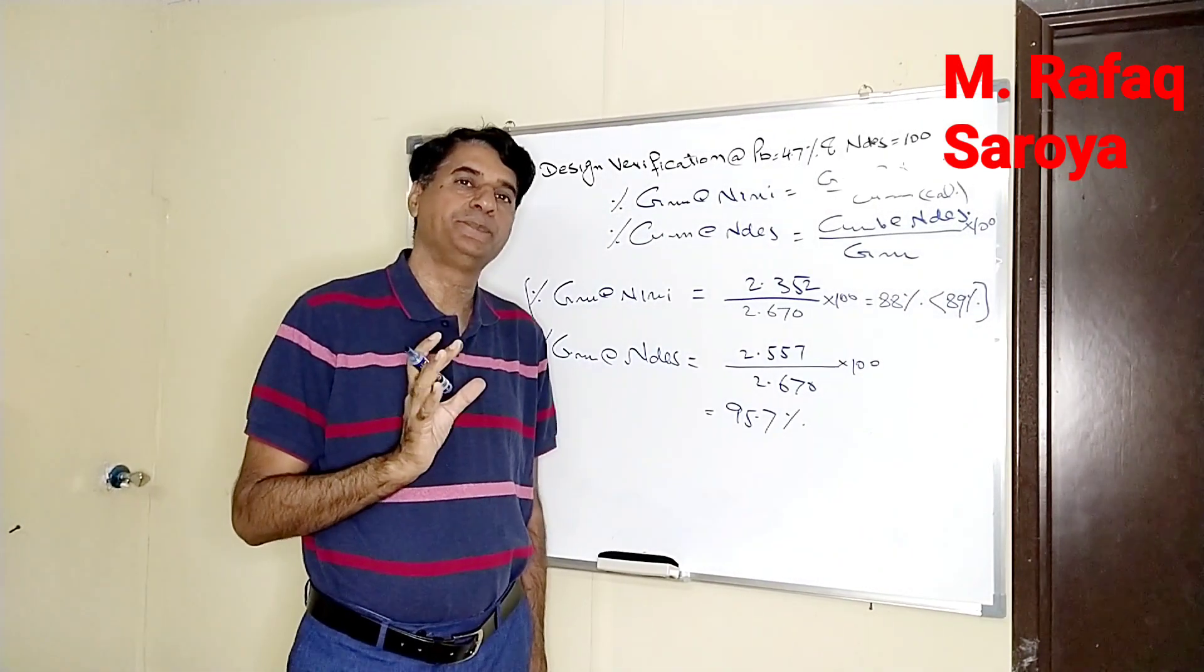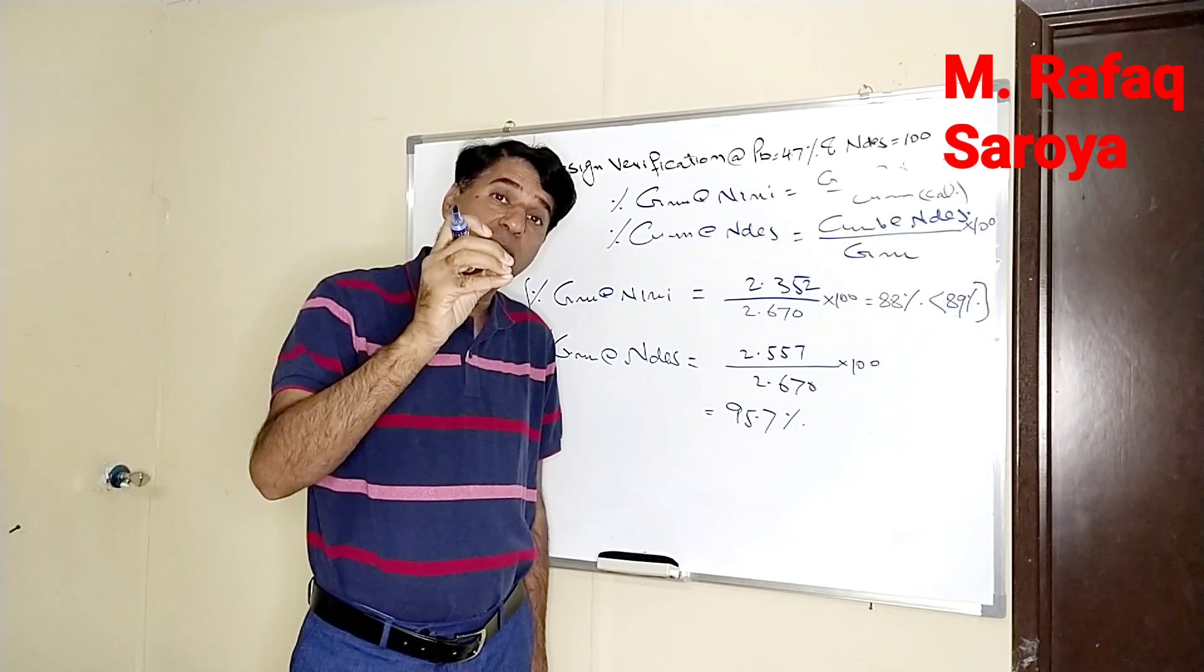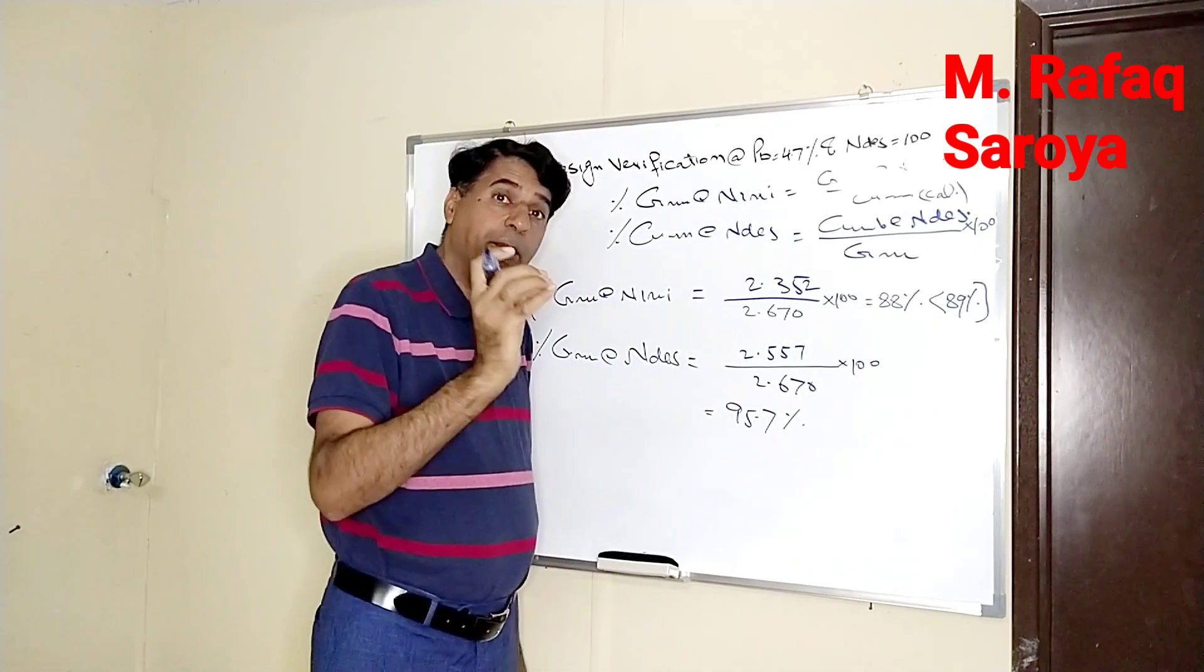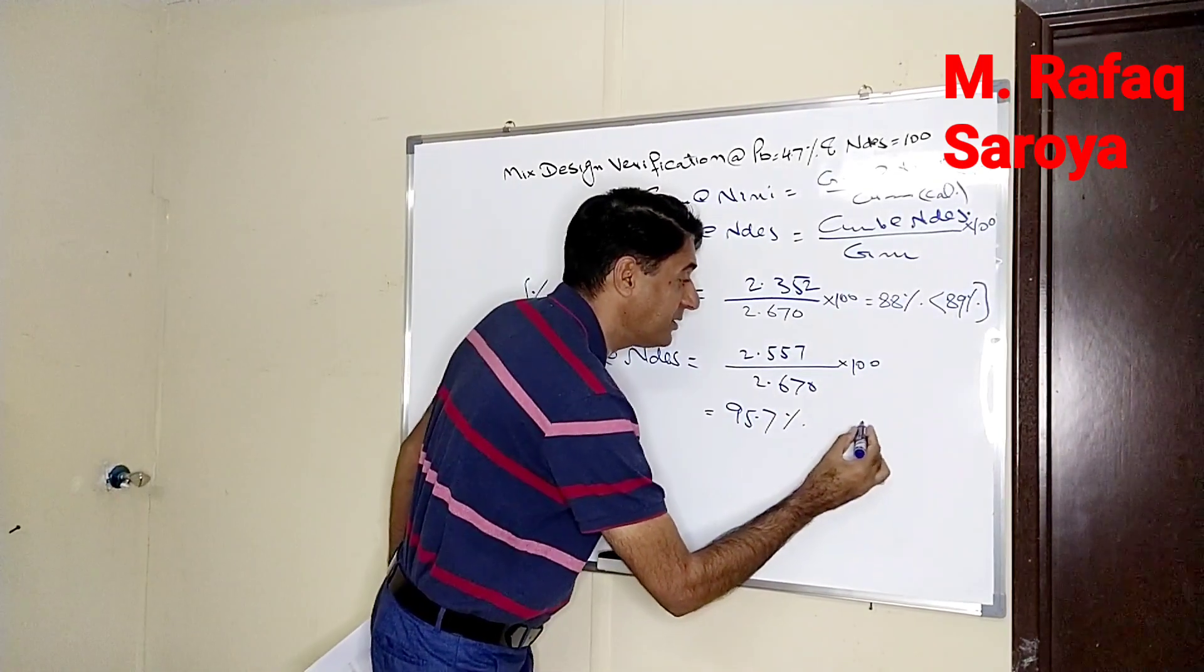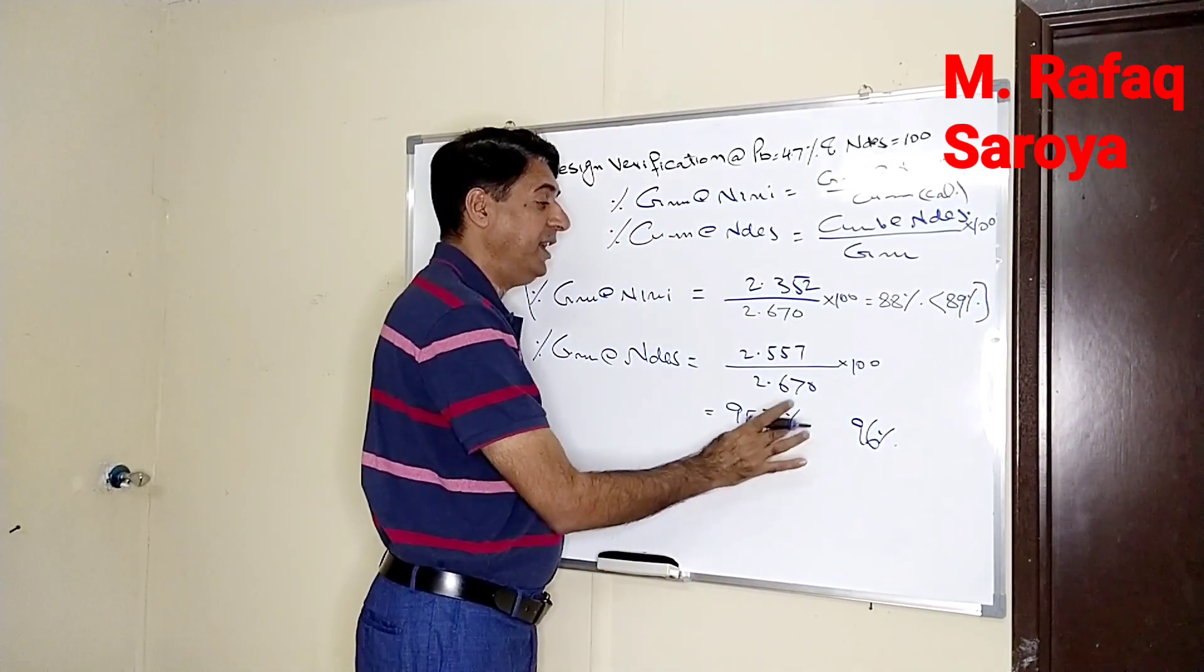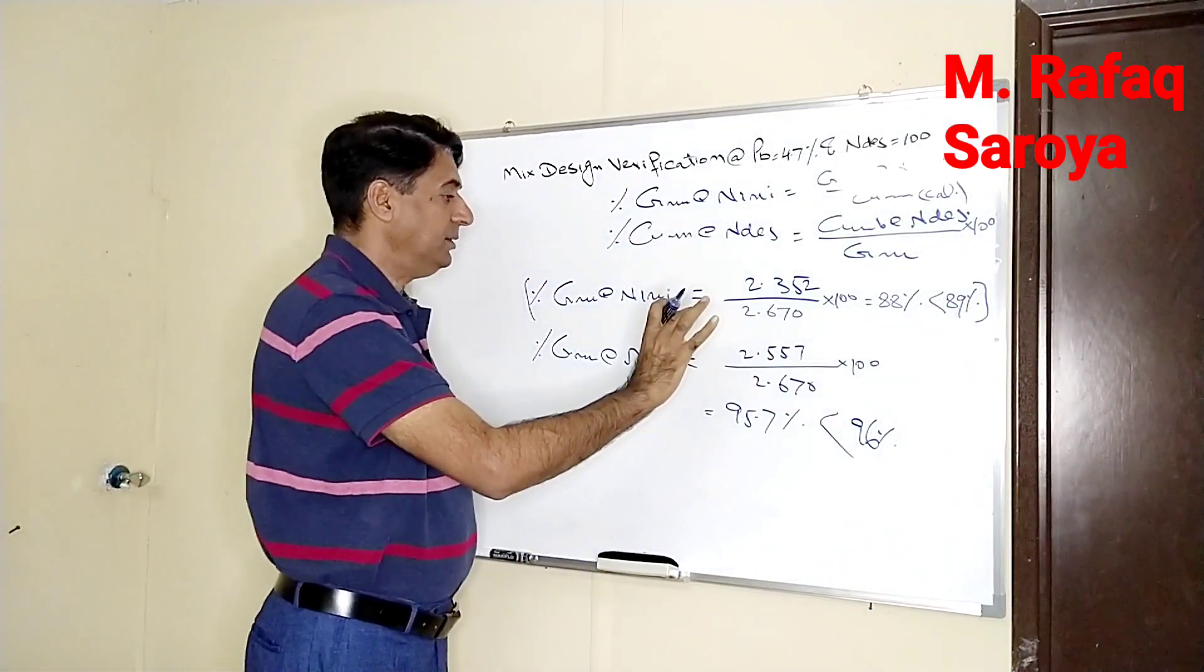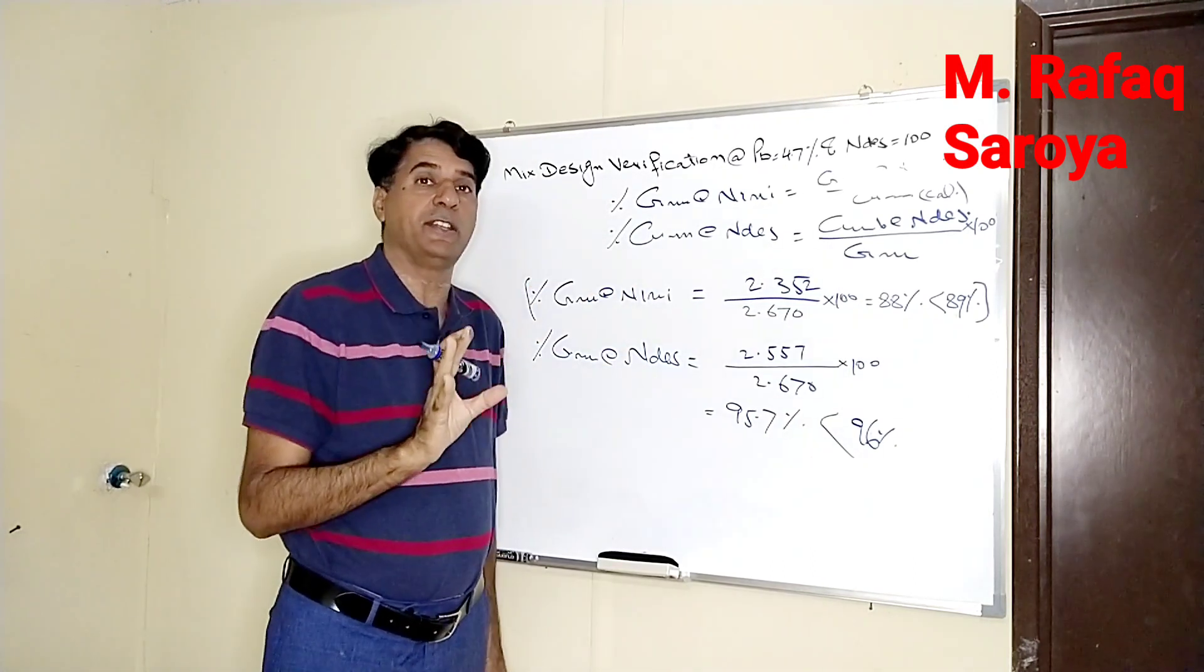And you know, per Superpave specification, the maximum allowable limit is 96%. Let me repeat it again, the maximum allowable limit is 96%. How much over here? 95.7%. It is less than 96%, so it means that this binder content is going to satisfy all the characteristics.